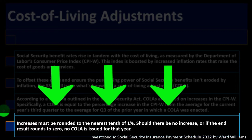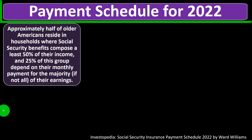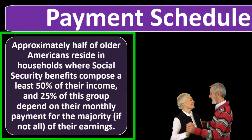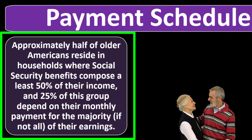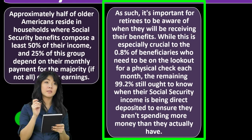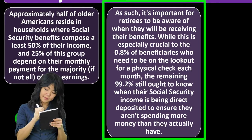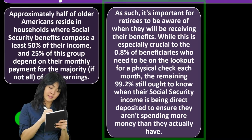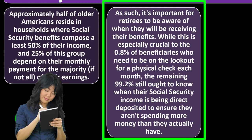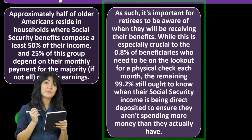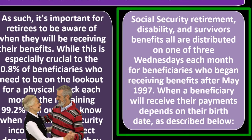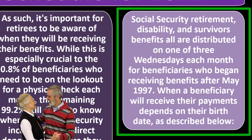Approximately half of older Americans reside in households where Social Security benefits compose at least 50 percent of their income, and 25 percent of that group depend on their monthly payment for the majority — if not all — of their earnings. It's important for retirees to be aware of when they'll receive their benefits. Social Security retirement, disability, and survivor benefits are all distributed on one of three Social Security Wednesdays each month for beneficiaries who began receiving benefits after May 1997.